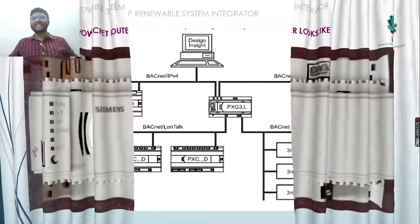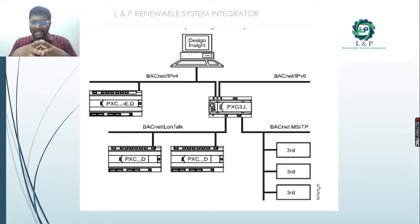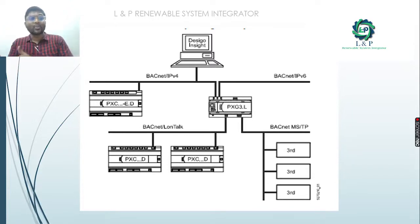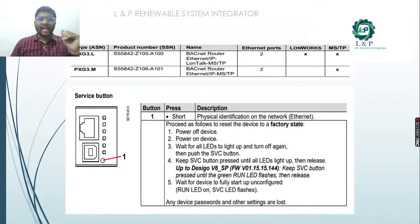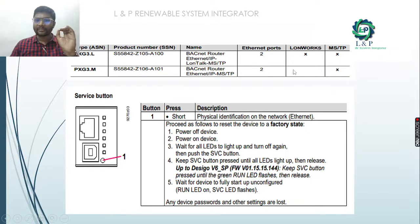This is a simple system architecture. When controlling equipment with DESIGO, through BACnet IP we can communicate with different field devices and establish communication with third-party devices as well. For the PXG3L model we have two Ethernet ports, a LAN works port, and MSTP. For the PXG3.M model we have Ethernet ports and MSTP ports.